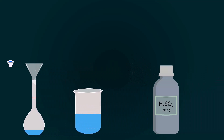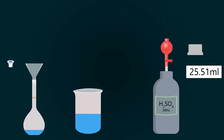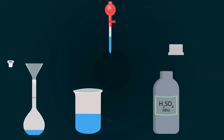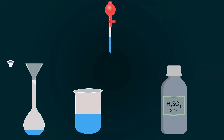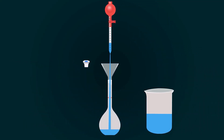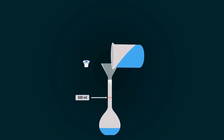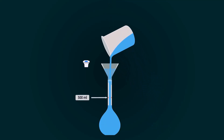Now take the bottle of 98% H2SO4, open the lid, and pipette out the required volume, which is 25.51 ml. Pour this into the volumetric flask. Now add more distilled water up to the 500 ml mark.